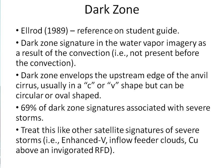Now let's discuss the dark zone satellite signature, first discussed in LROD 1989. The dark zone signature in the water vapor imagery is the result of the convection — it's not present before the convection. The dark zone envelops the upstream edge of the anvil cirrus, usually in a C or V shape, but can be circular or oval shaped. Statistically, 69% of dark zone signatures were associated with severe storms. Treat this like any other satellite signature of severe storms: if you see the signature, the storm is most likely severe; however, if you don't see it, that doesn't mean the storm is not severe.